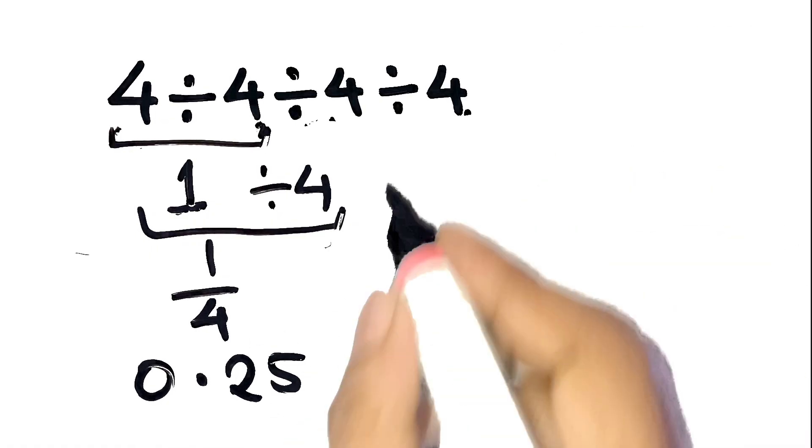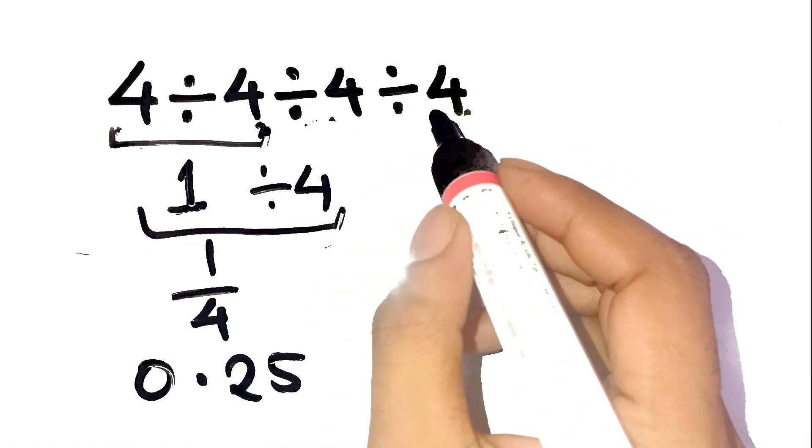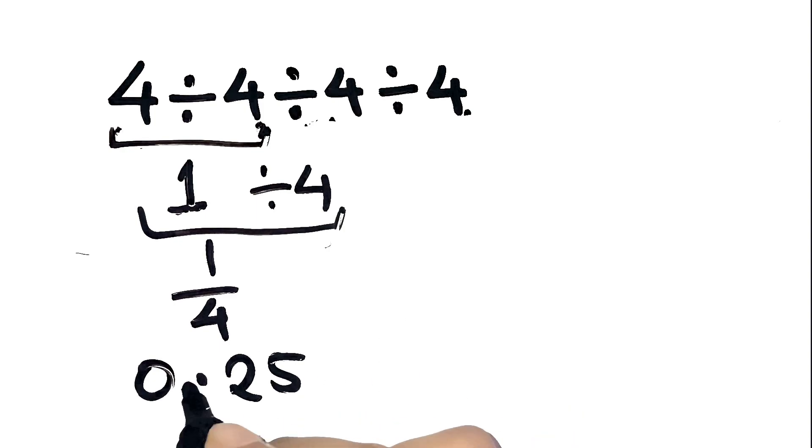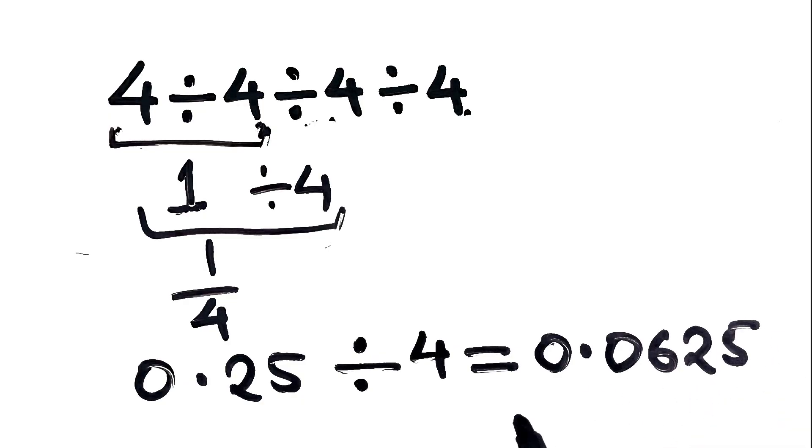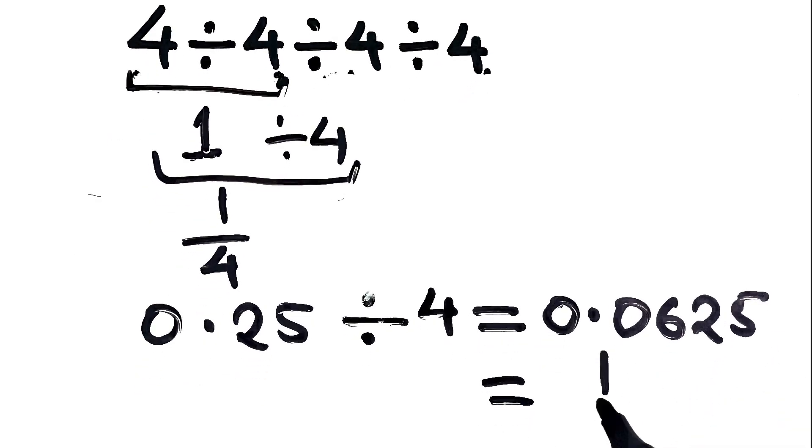We're not done yet. Now we divide that again by 4. So, 0.25 divided by 4 equals 0.0625. Or if you like fractions, that's 1 over 16.